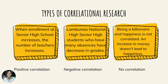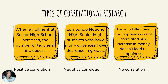There are three types of correlational research: positive correlation, negative correlation, and no correlation. A positive correlation is when the relationship between two variables moves in tandem — that is, in the same direction. It exists when one variable decreases as the other decreases, or one variable increases while the other increases. For example, when enrollment at senior high school increases, the number of teachers increases as well. It moves in tandem, in the same direction.